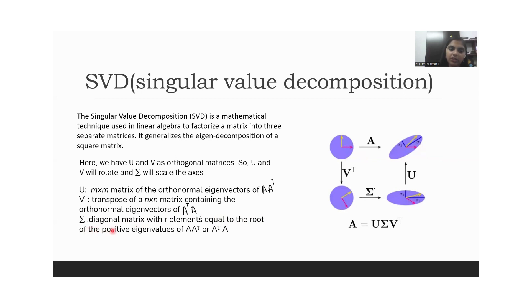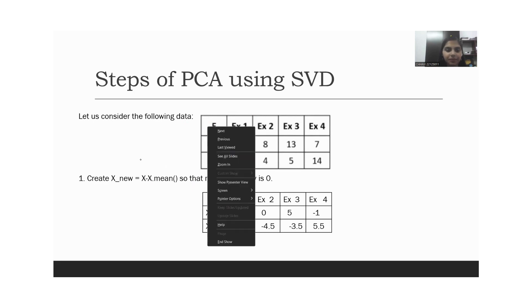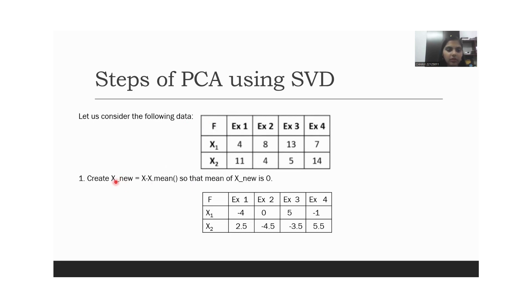So now let's move to the steps. Our dataset that we consider for this example is this, the same we have used in the class. First we will find the mean and make it mean-centered. This is the dataset we found by converting it to mean-centered data.